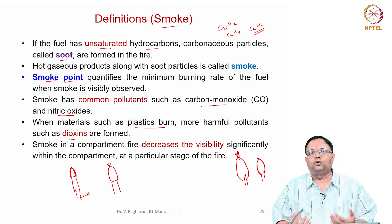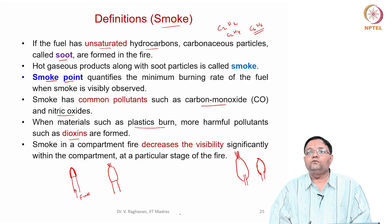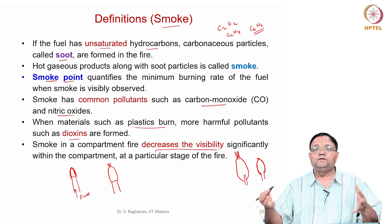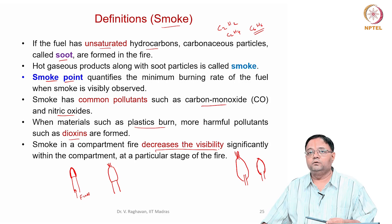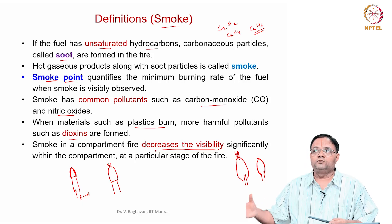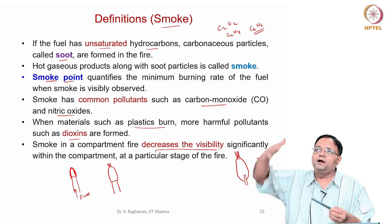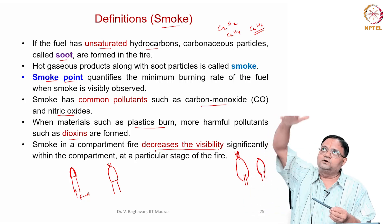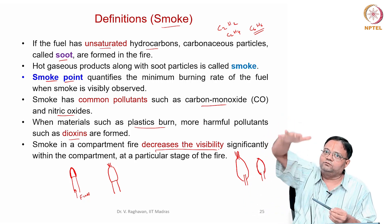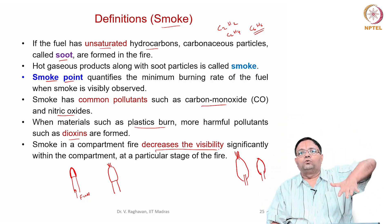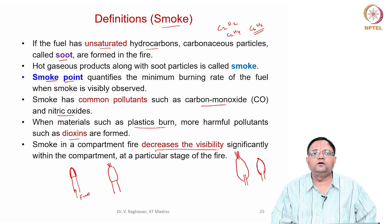In a fire we cannot control this. So obviously you will see that a lot of smoke will be present. This smoke decreases visibility, especially within a compartment — if a commodity is burning within a room, initially there will be visibility, but once the smoke layer accumulates it goes to the ceiling, and from the ceiling it descends down. The smoke layer descending down will cause significant visibility issues.